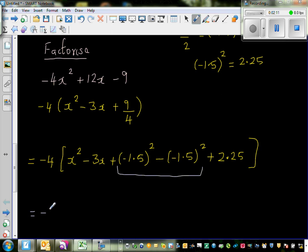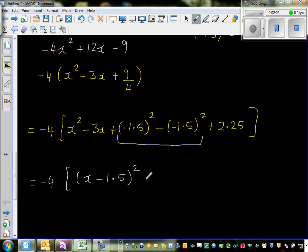This is now -4 times... This has become a perfect square of (x - 1.5)². This is -2.25, so -2.25 plus 2.25 cancel out.